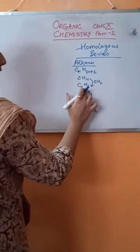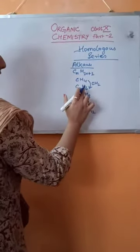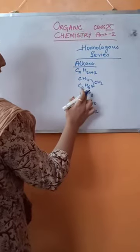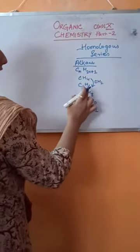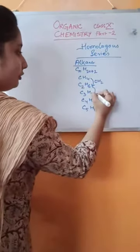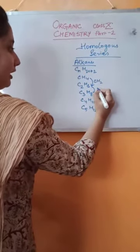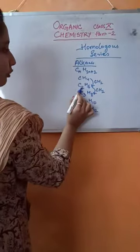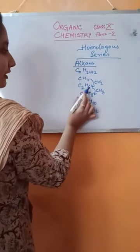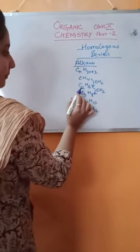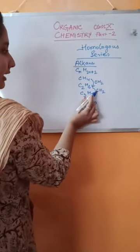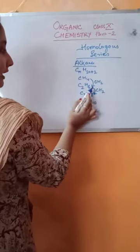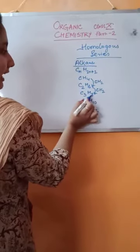Again, if we see the formula of ethane and propane, here also we see that ethane and propane differ by a CH₂ group. Ethane has 2 carbons and 6 hydrogens. If we add 1 carbon and 2 hydrogens to ethane, then we get C₃H₈.